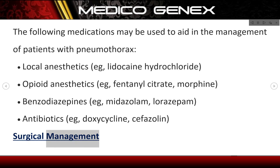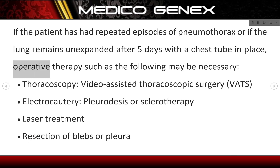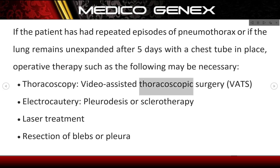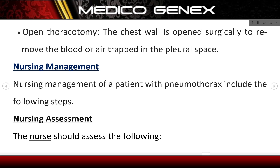Surgical management. If the patient has had repeated episodes of pneumothorax or if the lung remains unexpanded after five days with a chest tube in place, operative therapy such as the following may be necessary: thoracoscopy, video-assisted thoracoscopic surgery (VATS), electrocautery, pleurodesis or sclerotherapy, laser treatment, resection of blebs or pleura, and open thoracotomy, in which the chest wall is opened surgically to remove blood or air trapped in the pleural space.